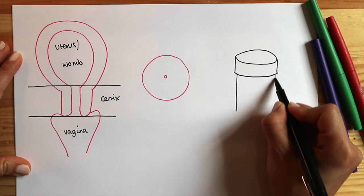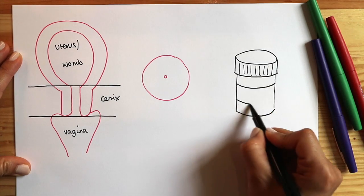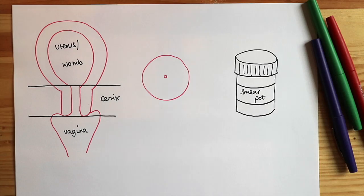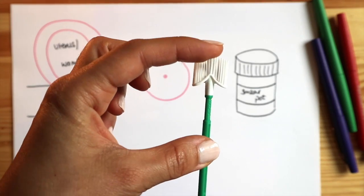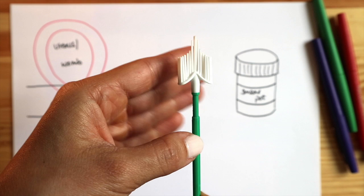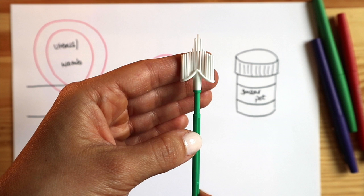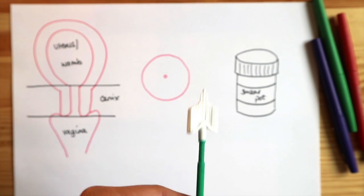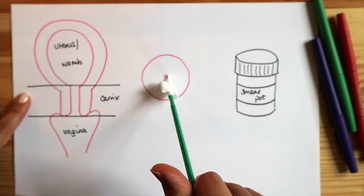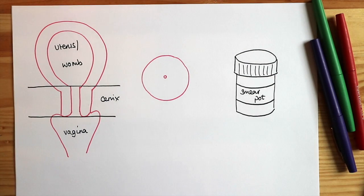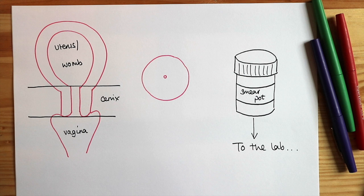We use a smear pot which contains some preservative fluid and we use a smear brush to collect cells from the cervix. The brush has very soft bristles and these exfoliate the cells when we rotate the brush in the centre of the cervix to collect the cells that we want to look at. We put those cells into the smear pot and send it to the lab.